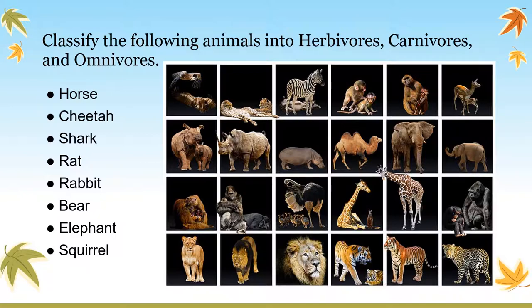Now let us see if we can divide the following animals into herbivores, carnivores, and omnivores. Horse is a herbivore animal because it eats grass. Cheetah hunts other animals and eats their flesh, so it is a carnivore animal. Shark eats other small fish, so it is also a carnivore animal. Rat, as we discussed, eats grains but sometimes eats leftover meat, so it is an omnivore animal.